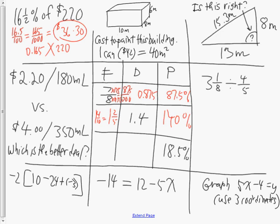Finally, 18.5% is 18.5 out of 100, which is 185 over a thousand, or 185 thousandths. The next question has three and one-eighths divided by four-fifths. The first thing you should do is convert the mixed number to an improper fraction, so this becomes 25 eighths divided by four-fifths.